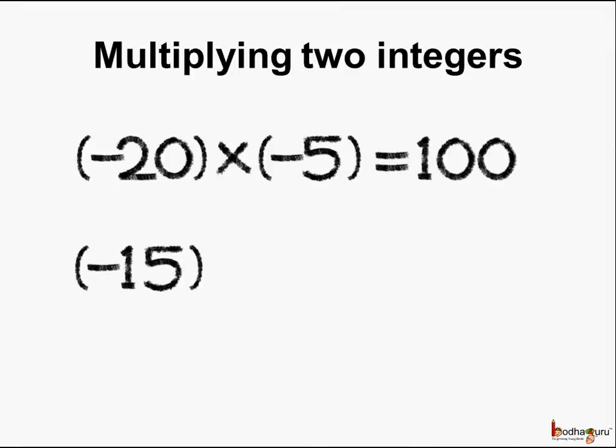Now another example. What is minus 15 multiplied by 17 equal to? Here we are multiplying a negative number by a positive number, so the answer would be a negative number.